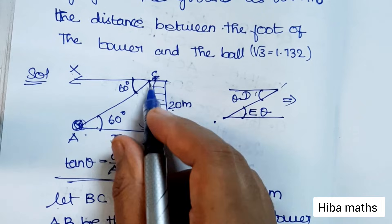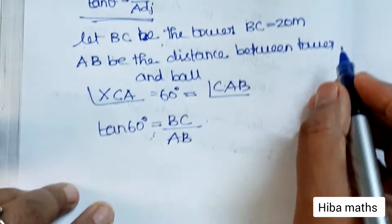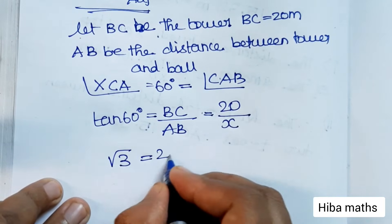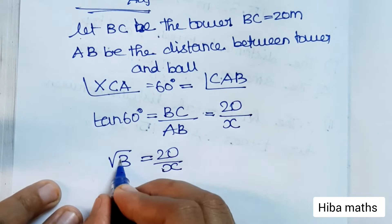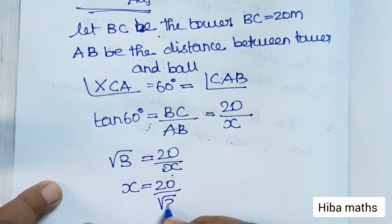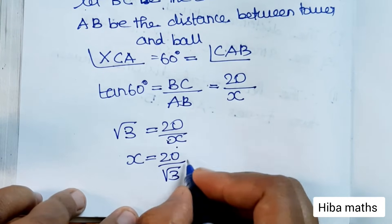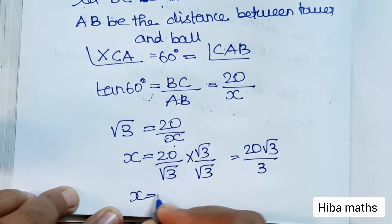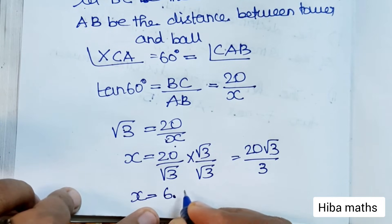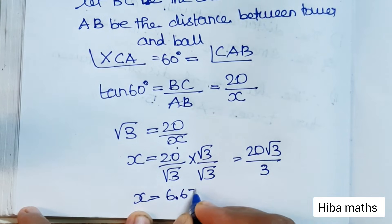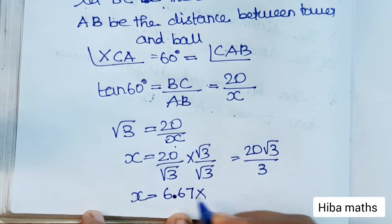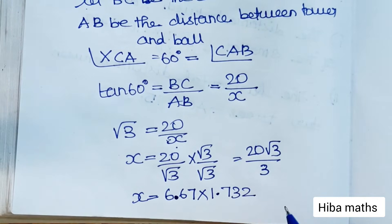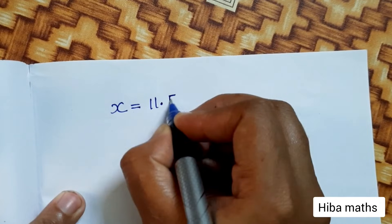Tan 60 degrees equals opposite BC over adjacent AB. Substituting BC = 20 and AB = x, and tan 60 = √3, we get √3 = 20/x. Cross multiplying gives x·√3 = 20, so x = 20/√3. Rationalizing: x = 20√3/3, which equals approximately 11.546.